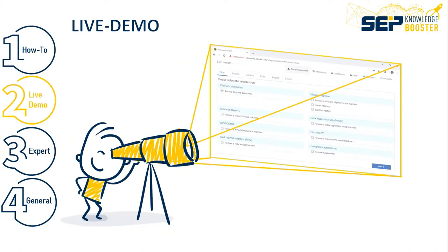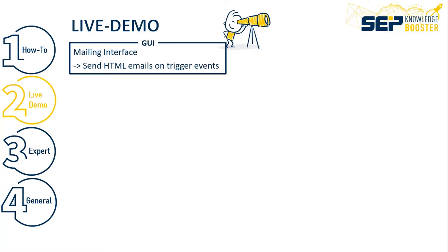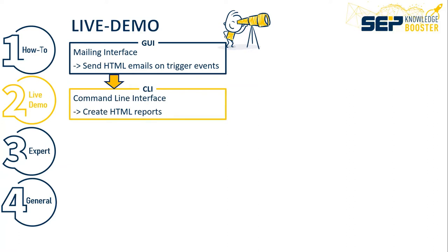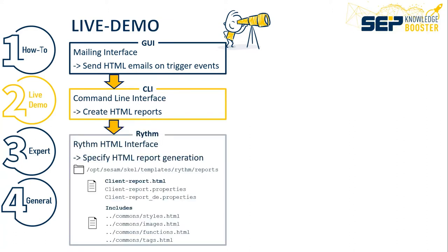Now the live demonstration. First I will show you the mails you get if you configure the mailing interface and how it is configured in our GUI. Then I will show you the command lines used to send out the email and create the reports. Then I will show you the structure in our installation directory where you can find these report templates — because the easiest way to create a customized HTML report is to take a template and adapt it to your needs.